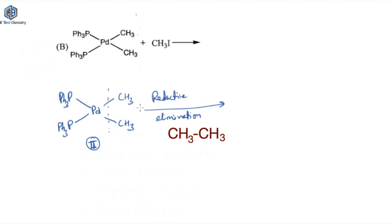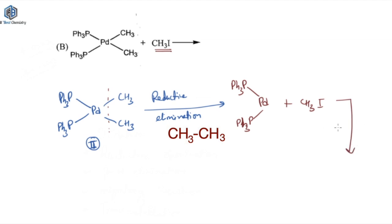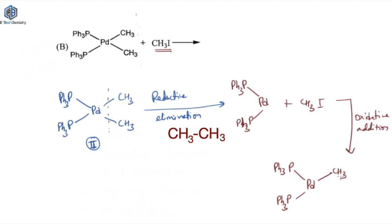So what you are going to get is a Pd(PPh3)2 complex. Now remember that the reaction has not been completed yet — you still have to treat it with CH3I as given in the reaction. So next, oxidative addition of methyl and iodine both onto this palladium complex occurs, and you get Pd(PPh3)2(CH3)(I). Palladium was in zero oxidation state and is now again in +2 oxidation state.